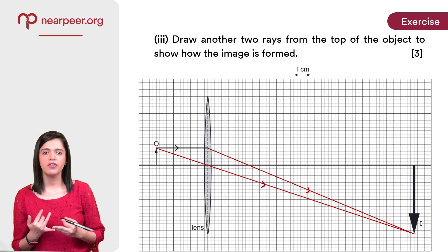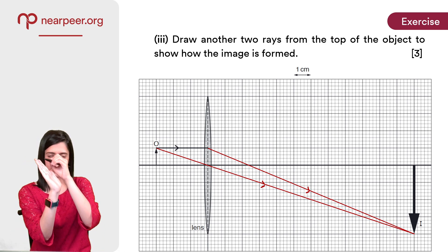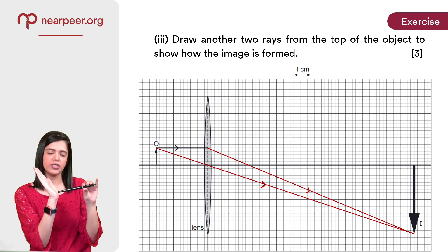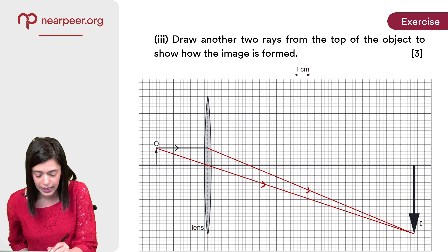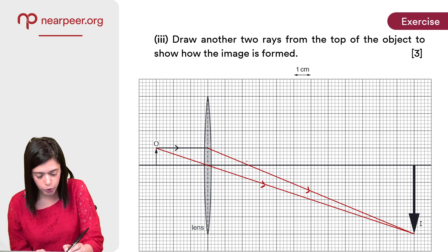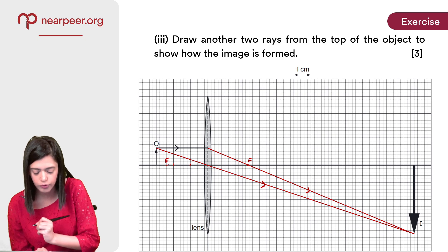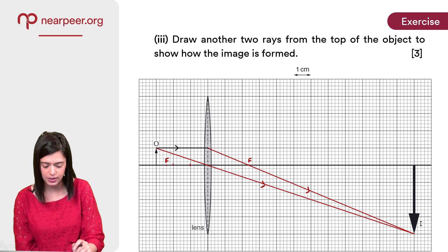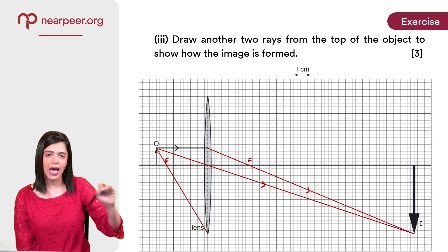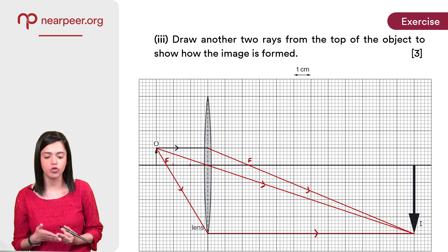For the second ray: whenever a ray of light passes through the focal point before hitting the lens, after refraction it always comes out parallel to the principal axis. I'll mark the focal point on the left-hand side of the lens — counting 2.4 cm gives us its position. The ray passes through that focal point, hits the lens, and then travels parallel to the principal axis. Add arrows and the diagram is complete.